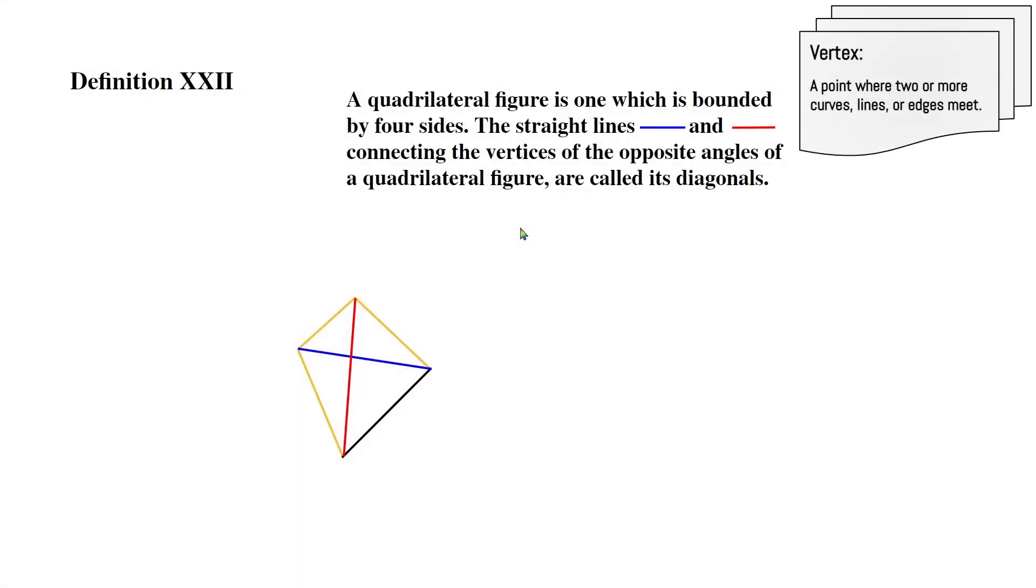A quadrilateral figure is one which is bounded by four sides. In this image, the straight lines blue and red connecting the vertices of the opposite angles of a quadrilateral figure are called its diagonals. A vertex is a point where two or more curves, lines, or edges meet. The straight lines blue and red connect these vertices, and so these are called the diagonals because they connect opposite sides of the figure.